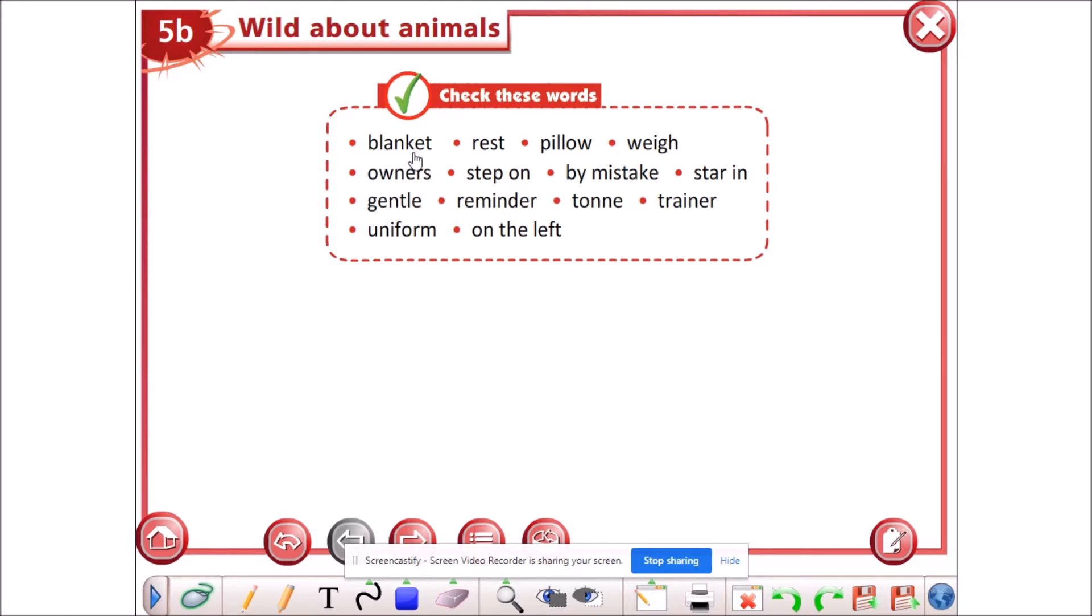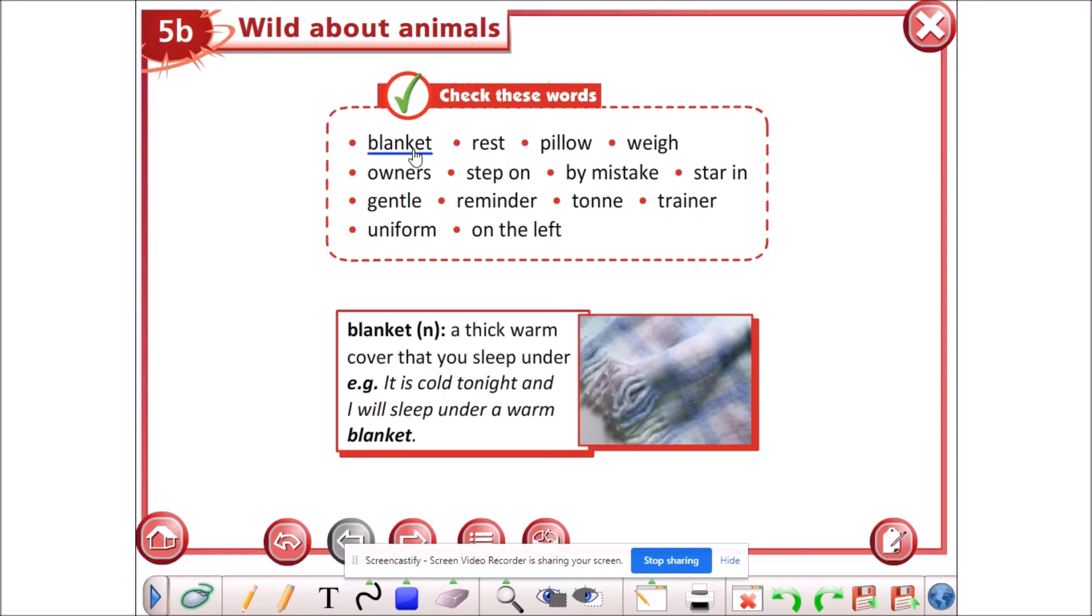Gentle, reminder, ton, trainer, uniform, and on the left. I'm going to click on each word to see the definitions. Blanket is a noun and means a thick warm cover that you sleep under.